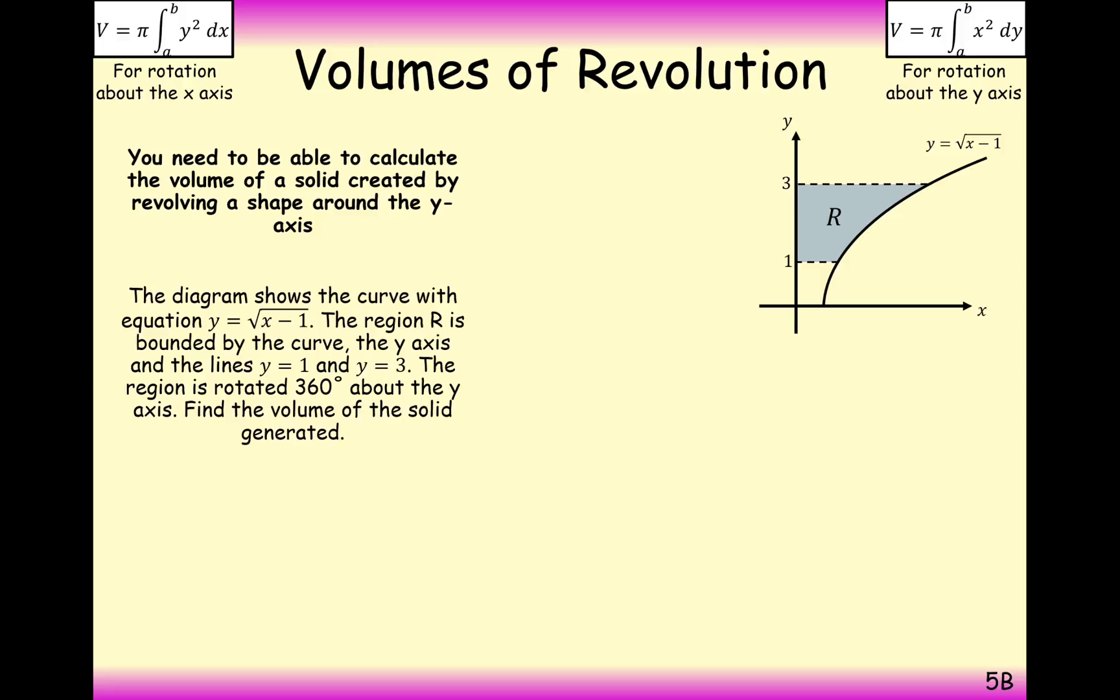Let's have a look at this question here then. The diagram shows a curve with equation y equals the square root of x minus 1. The region R is defined by the boundary between the curve y, the y-axis and y equals 1 and 3. The region is rotated 360 degrees around. Find the volume of the shape that we need.